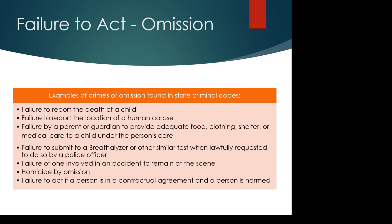Homicide by omission is killing someone by failing to take an act. Usually there is a relationship involved. Failure to act when a person is in a contractual agreement and someone is harmed is another example — if you're the person supposed to tighten the bolts on a bungee jumping machine at an amusement park and you just don't do it, and that person is injured, your failure to act could result in a criminal charge.